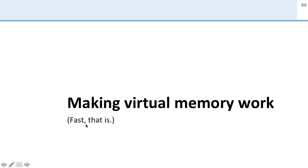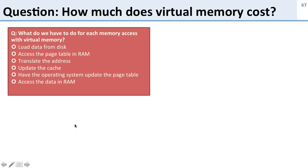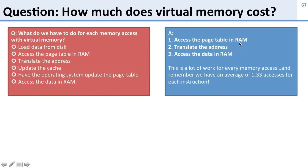How do we make virtual memory work — that is, get all those benefits without slowing down the computer? For every single memory access, we have to access the page table in RAM to get the page table entry for the translation — that's one memory access. Then we translate the address, and then we can access the data in RAM. So we have at least two memory accesses: one to the page table and one to the data, plus all the translation work.